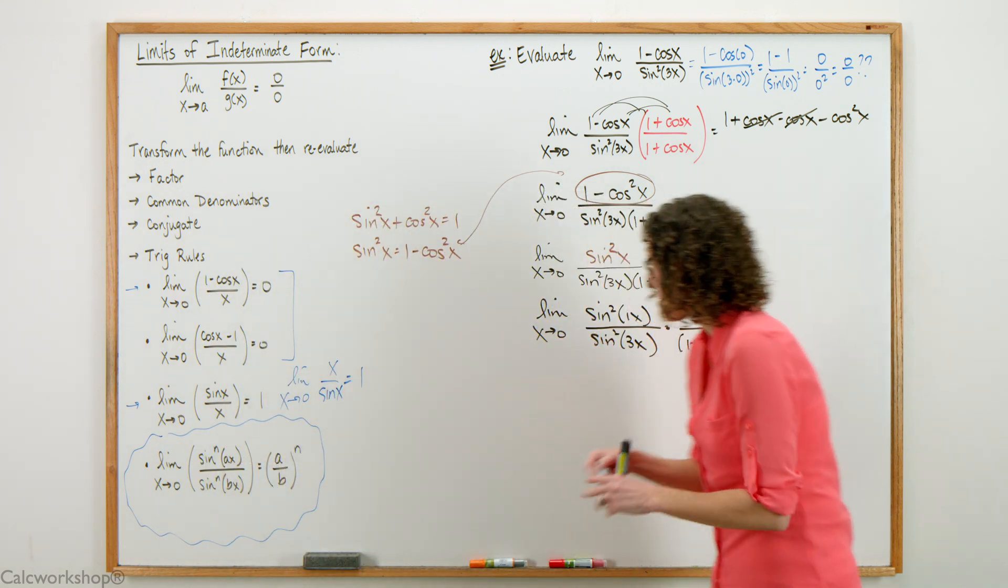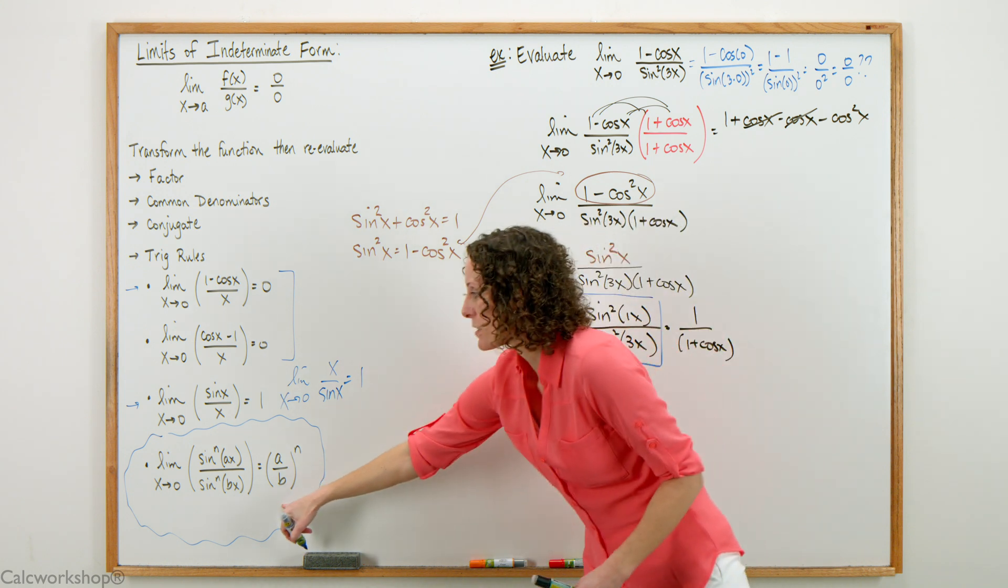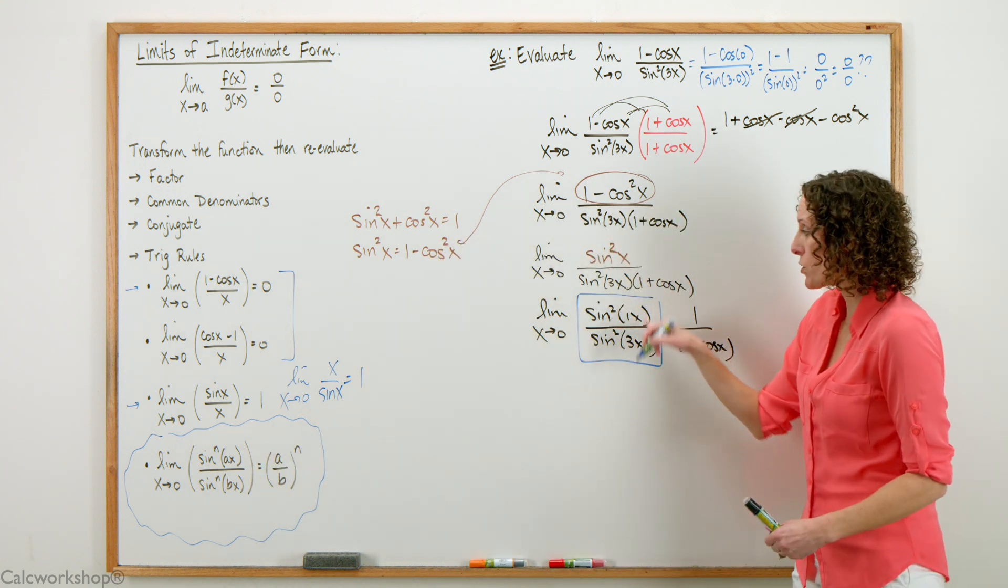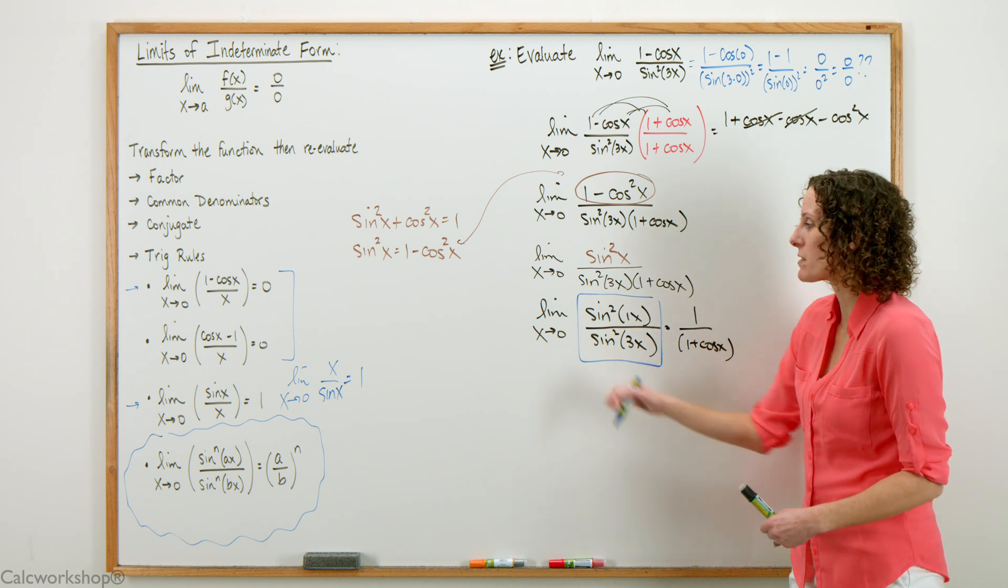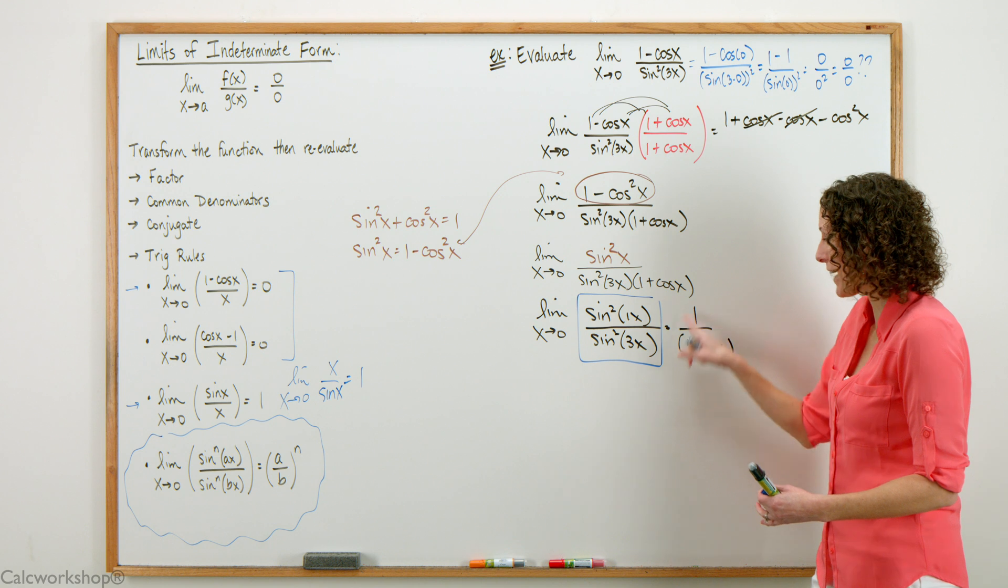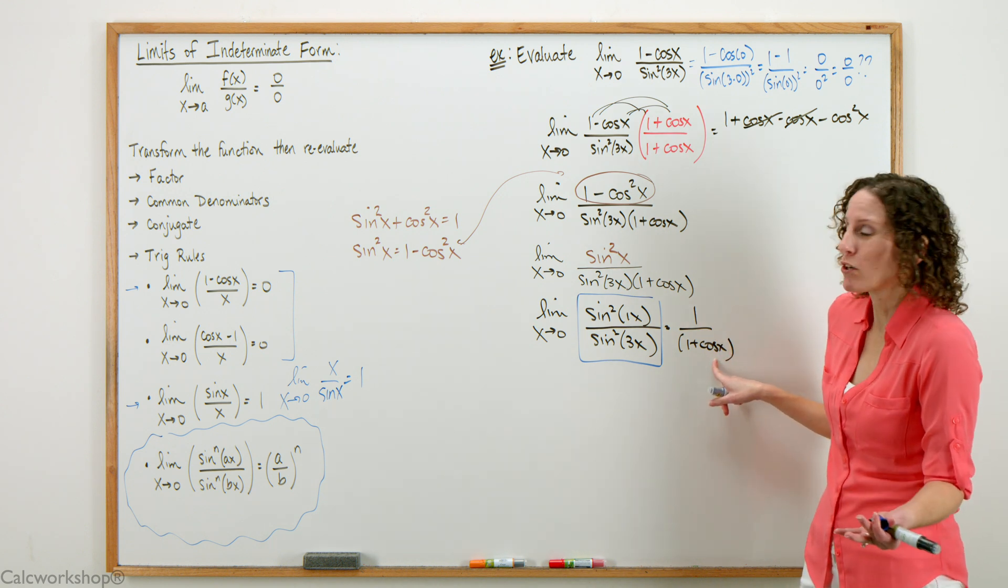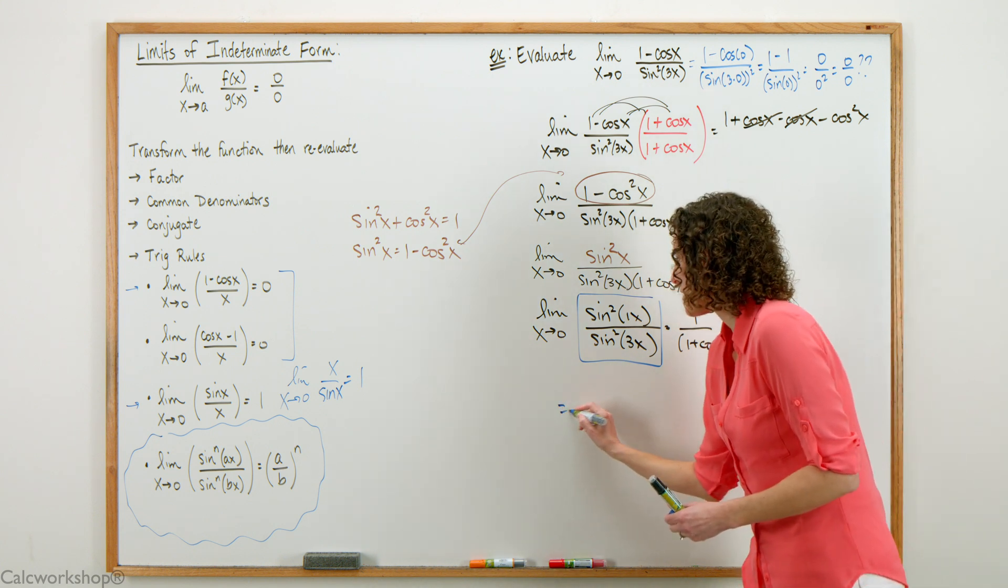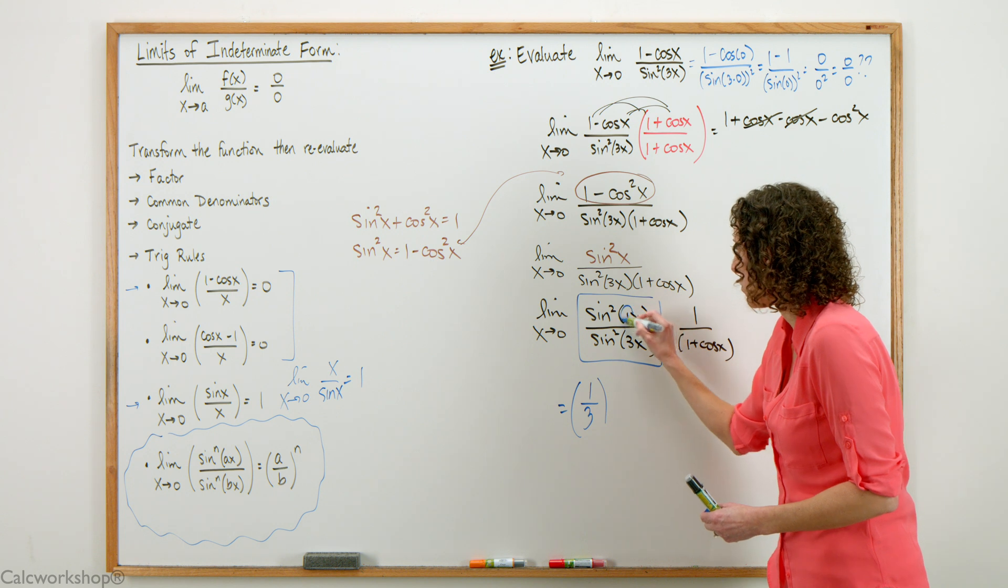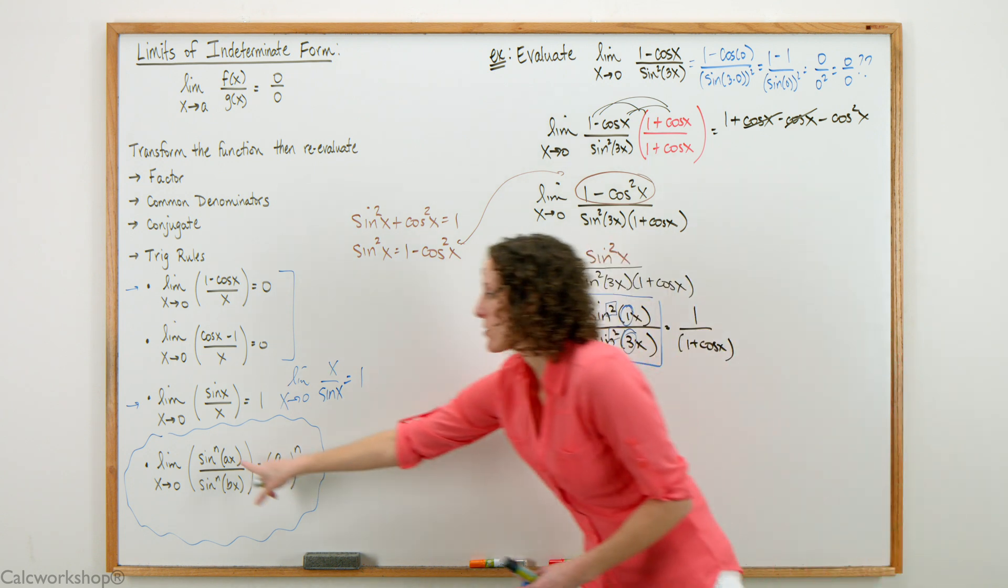We have the limit as x approaches 0 of sine squared of 1x divided by sine squared of 3x times 1 over 1 plus cosine x. I just rewrote that so it's clearer. Notice what we can do. This is the same as the property—sine squared over sine squared. We'll pull those leading coefficients and square them. We can also evaluate this fraction by itself.